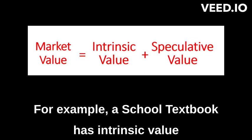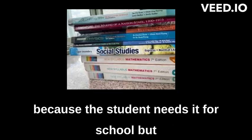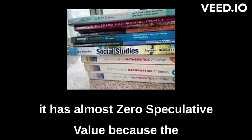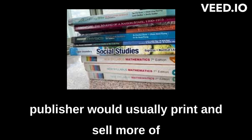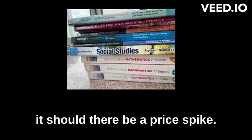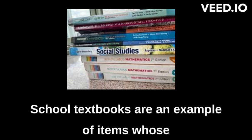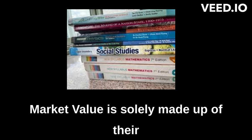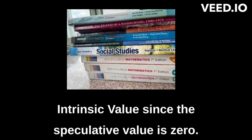For example, a school textbook has intrinsic value because the student needs it for school, but it has almost zero speculative value because the publisher would usually print and sell more of it should there be a price spike. School textbooks are an example of items whose market value is solely made up of their intrinsic value, since the speculative value is zero.